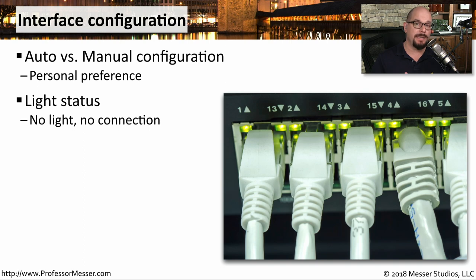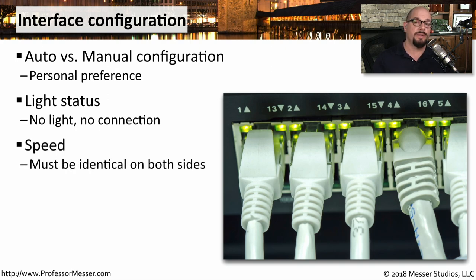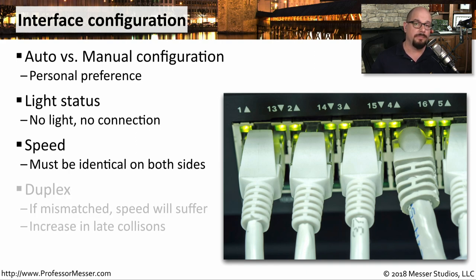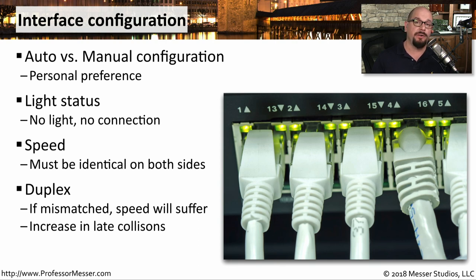The first thing you'll want to check for is a link light — that means you at least have connectivity between your device and the switch. If there's no light, then there's no connection, so there might be a cabling problem or an interface configuration issue. The speed of the ethernet connection also needs to match on both sides — if you have 100 megabits on one side, it needs to be 100 megabits on the other. If there's a mismatch in those speeds, you'll have no connectivity across the network. A more challenging problem to troubleshoot is when the duplex is mismatched between two devices — when one side is configured as half duplex and the other as full duplex. You'll have connectivity between the devices, but the throughput will be slower than expected, and you'll also see an increase in the late collision counter, which might give you an indication of a duplex mismatch.